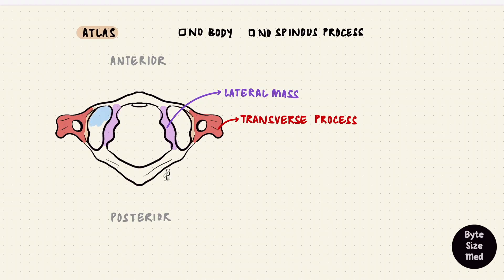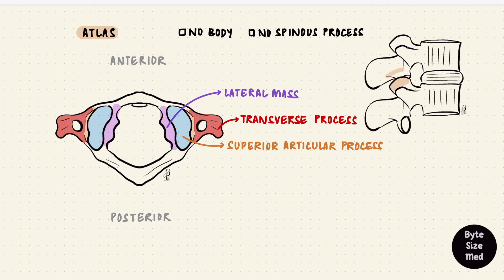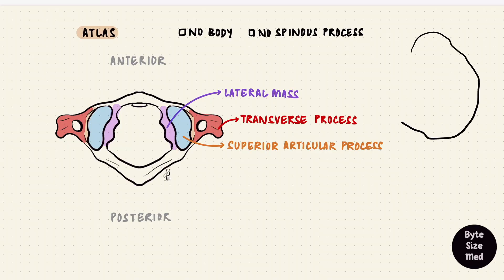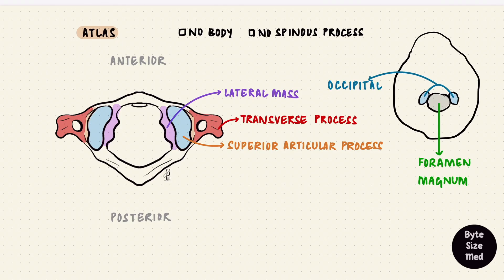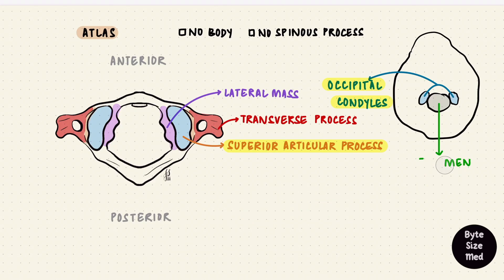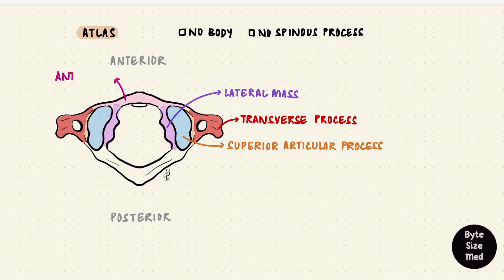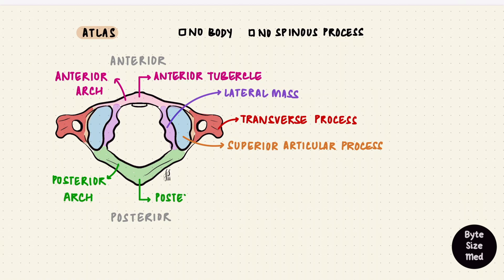Looking at atlas from above, these two facets are the superior articular processes. All vertebrae have those, to articulate with the inferior articular processes of the vertebra above. But what's above atlas? The cranium. If we flip the cranium upside down, this is the foramen magnum, from where the spinal cord emerges. This bone is the occipital bone, and on either side of the foramen magnum are condyles called the occipital condyles. That's what the superior articular processes of atlas articulate with. Together they form a joint called the atlanto-occipital joint. Atlas has an anterior arch and a posterior arch, which unite in the midline by an anterior tubercle and a posterior tubercle, giving us a ring-shaped bone.